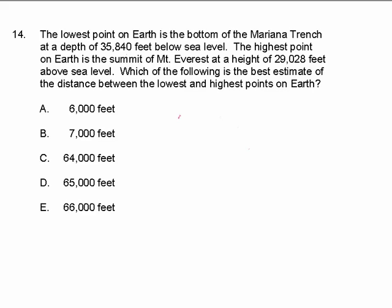This is yet another estimation problem, but it has an element we haven't seen in other estimation problems: we're dealing with negative and positive numbers. Even though you don't see a negative sign written, the wording tells us that sea level is a reference point which equals zero. 35,840 feet below sea level falls on the negative side of the number line.